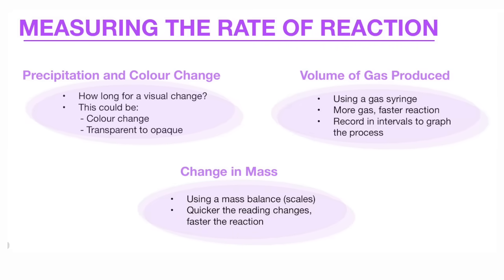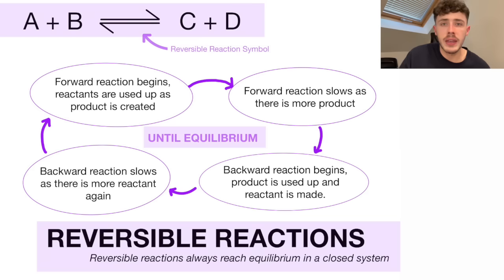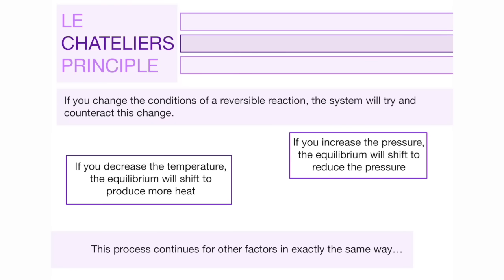Different ways to measure the rate of reaction during an experiment include precipitation and colour change, a change in the mass, or a volume of gas given off. You need to understand reversible reactions — this is when two reactants make a product, but then those products can be reversed to make the reactants again. And finally, Le Chatelier's principle and the concept of dynamic equilibrium.